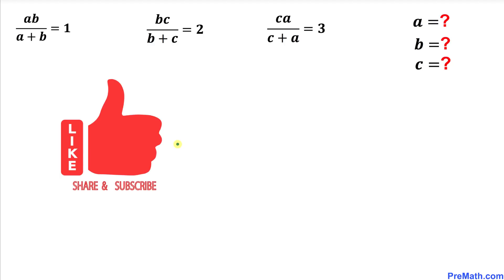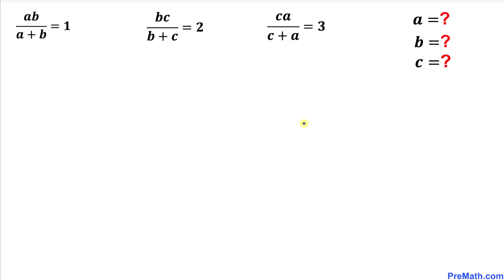Please don't forget to give a thumbs up and subscribe. So let's go ahead and get started with the solution. As you can see, we are dealing with these fractions. So let's go ahead and make the right-hand side fractions as well. I can write 1 as 1 divided by 1, 2 as 2 divided by 1, and finally 3 as 3 divided by 1.